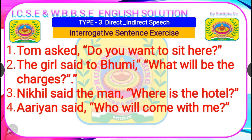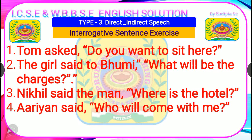Now some exercises for interrogative sentences. Type your answers in the comment box. Exercise 1: 'Tom asked, do you want to sit here?' Exercise 2: 'The girl said to Bhumi, what will be the changes?' Exercise 3: 'Nikhil said to the man, where is the hotel?' Exercise 4: 'Arian said, who will come with me?' Type your answers in the comment box — this will give you confidence in doing the exercises correctly.